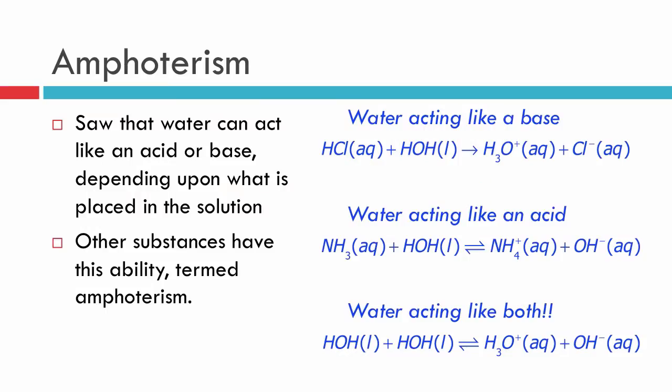It all starts with the idea that we have species that can act both like an acid or a base. For example, here's water acting like a base when it reacts with hydrochloric acid, and here's water reacting like an acid when it reacts with ammonia. However, we can even see that sometimes water will act like both, in this example with the autoionization of water.